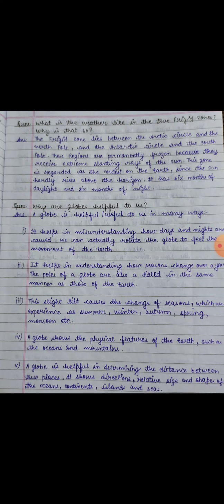It has six months of daylight and six months of night. Why are globes helpful to us? A globe is useful to us in many ways. It helps in understanding how days and nights are caused. We can actually rotate the globe to feel the movement of the Earth. It helps in understanding how seasons change over a year. The poles of a globe are also tilted in the same manner as those of the Earth. This slight tilt causes the change of seasons — summer, winter, autumn, spring, monsoon, etc.